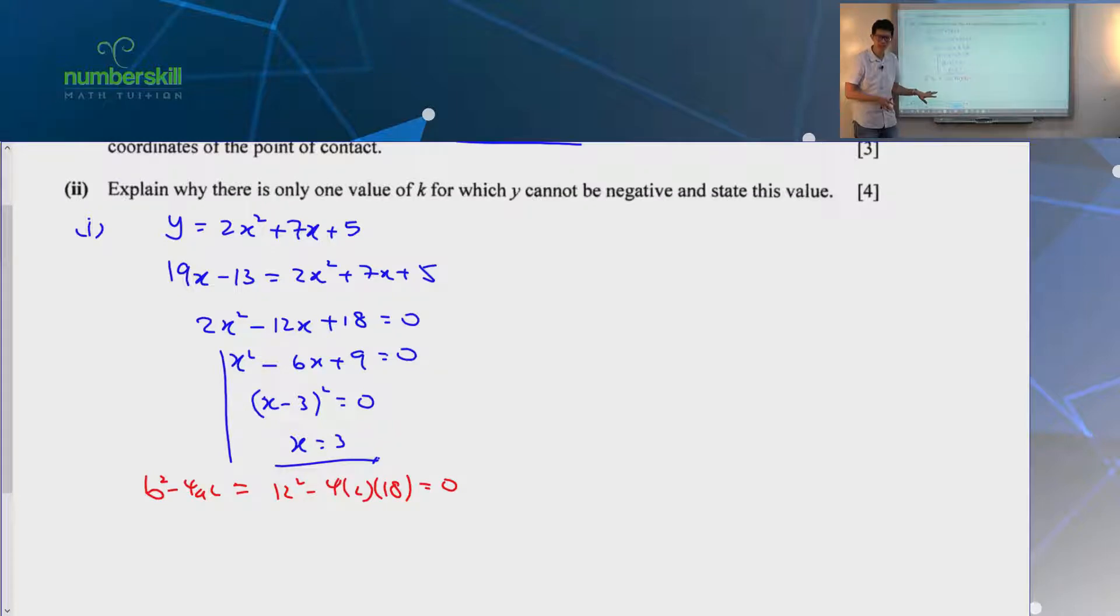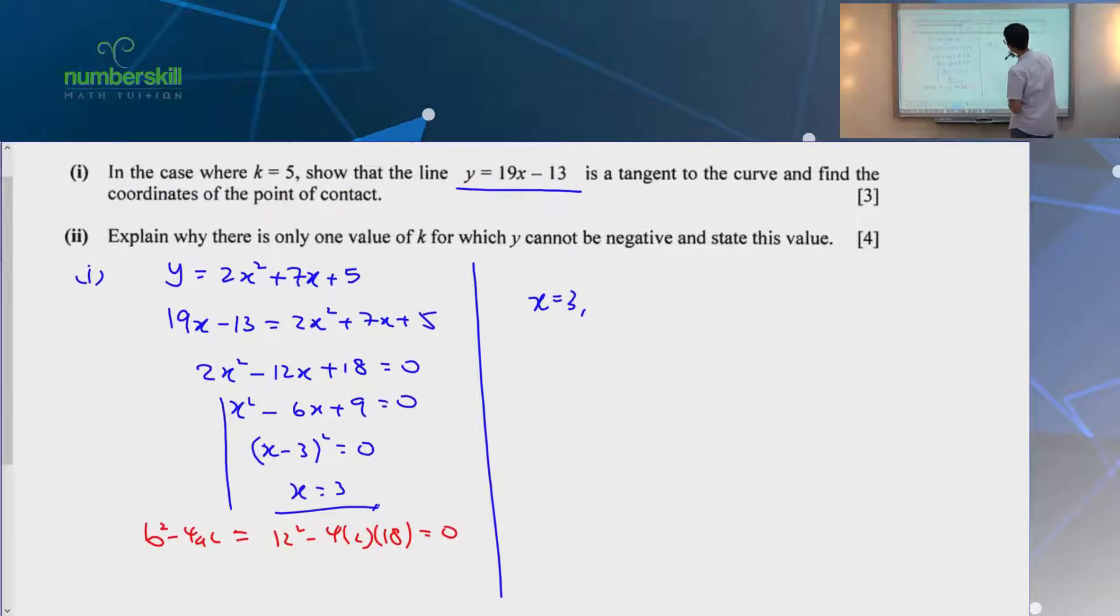But the whole idea is it works. As long as you are clear. Your working is clear. People understand that you are clear. People know that you know your stuff. You get the marks. So anyway, like I said, this is what probably everybody can do. That's why a lot of people get three marks. So when x equals 3, go get the y. Of course, you can put inside the line. I think that's much easier. The answer is 44, which is a very strange kind of number.